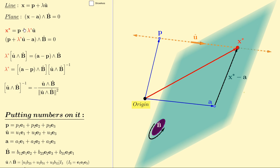Substituting this into this equation, we get, well, you can read it here, and when we rearrange that, we'll get lambda star times the outer product of u hat and b hat is equal to the outer product of a minus p and b hat.